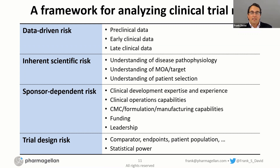The first category is data-driven risk: what is known in terms of the data for this particular asset. The second is inherent scientific risk: knowledge of the disease and the mechanism of action, as well as understanding of patient selection. Third is sponsor-dependent risk — somewhat of a catch-all covering expertise, experience, and capabilities across a range of functions that might make the trial more or less likely to succeed. Fourth is trial design risk, which is somewhat self-explanatory. It's important to note that trial design is really just one piece of the overall probability of success for a program.